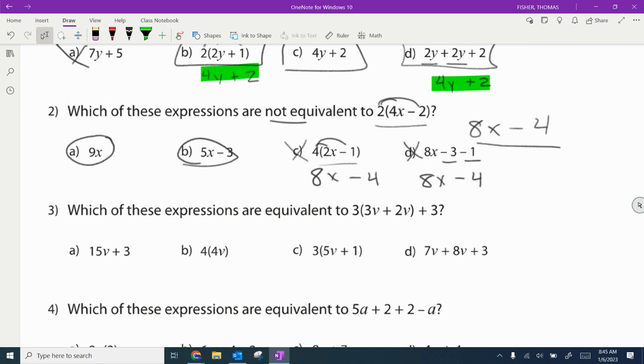And then it works similarly for the rest of these. I'll do a couple more just to give you some more examples. So 3 times 3v would be 9v. 3 times 2v would be 6v plus 3, which is then 15v total plus 3. Down below I see 15v plus 3 matches. It wants equivalent. So that one would be an answer.